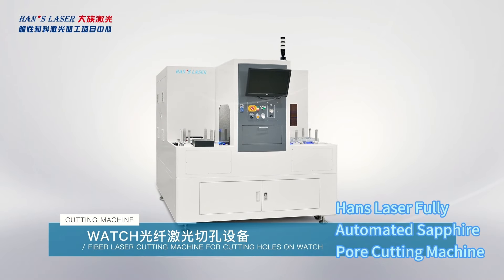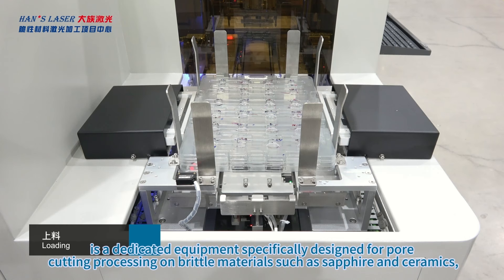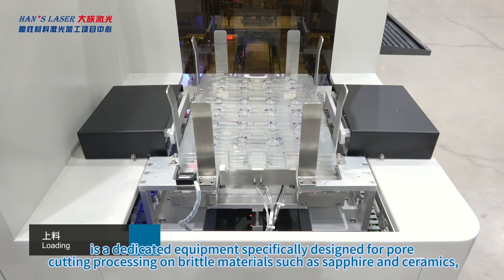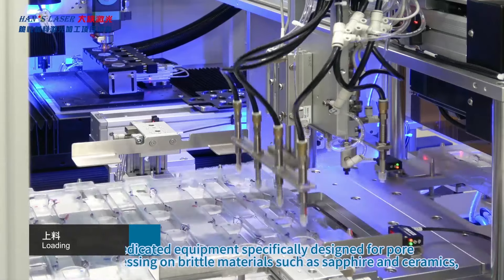Hans Laser Fully Automated Sapphire Pore-Cutting Machine is a dedicated equipment specifically designed for pore-cutting processing and brittle materials such as sapphire and ceramics.